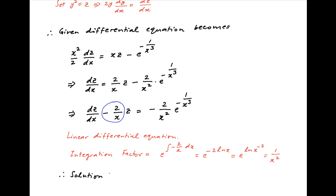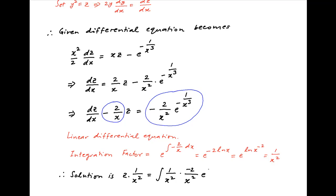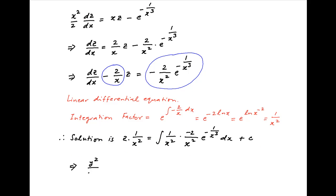Therefore the solution of the differential equation is given by z times the integrating factor 1 upon x square is equal to the integral of the integrating factor 1 upon x square times the right hand side of the above differential equation, which is minus 2 upon x square times e raised to the power minus 1 upon x cube dx. Replacing z with y square, we get y square upon x square is equal to minus 2 times the integral of e raised to the power minus 1 upon x cube divided by x raised to the power 4 dx plus a constant of integration.